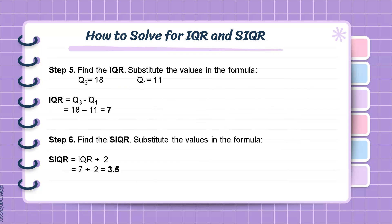Step 5: Find the value of the interquartile range. IQR = Q3 minus Q1 = 18 minus 11 = 7. Step 6: Determine the semi-interquartile range. SIQR = IQR divided by 2 = 7 divided by 2 = 3.5. So the value of our semi-interquartile range in this dataset is 3.5.